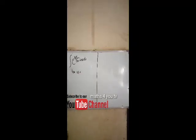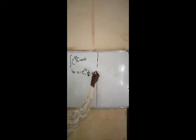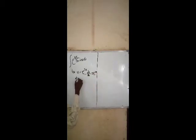We let u be equal to e to the power of 3x. If u is equal to e to the power of 3x, then du/dx is equal to 3e to the power of 3x. Now let dv be equal to sin x. Therefore, v is equal to minus cos x.